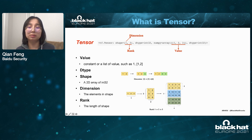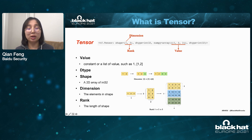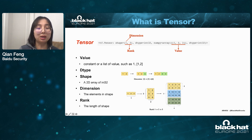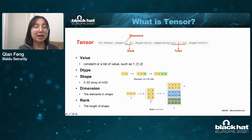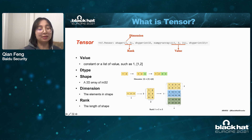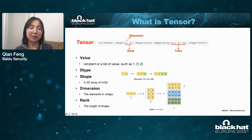Mutating the model graph means mutating the operator and the tensor. Let's discuss tensor mutation first. What is a tensor? A tensor is a high-dimensional matrix with three properties: shape, data type, and value. Value is a constant or a list of values, such as array [1, 2]. Data type is an object describing the type of the value. Shape is a 2D array with two properties — dimension and rank. Dimension is the element in the shape array, and rank is the length of the array.